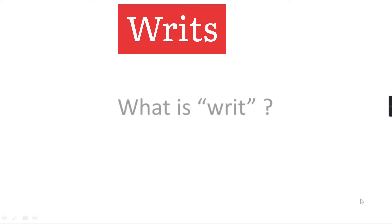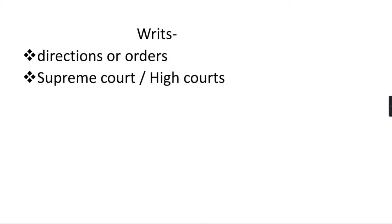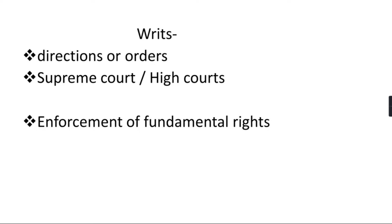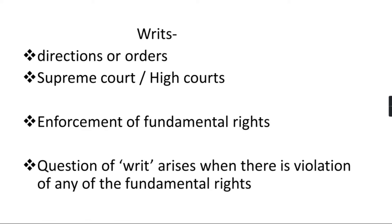Welcome to General Study Forum. In today's video we'll discuss writs — what they are, the different types of writs, and what courts can issue them. Writs are directions or orders issued by courts. As per the provisions, only the Supreme Court and the High Courts are empowered to issue writs. Writs are issued for the enforcement of fundamental rights, and the question of a writ arises when there is a violation of any fundamental right.